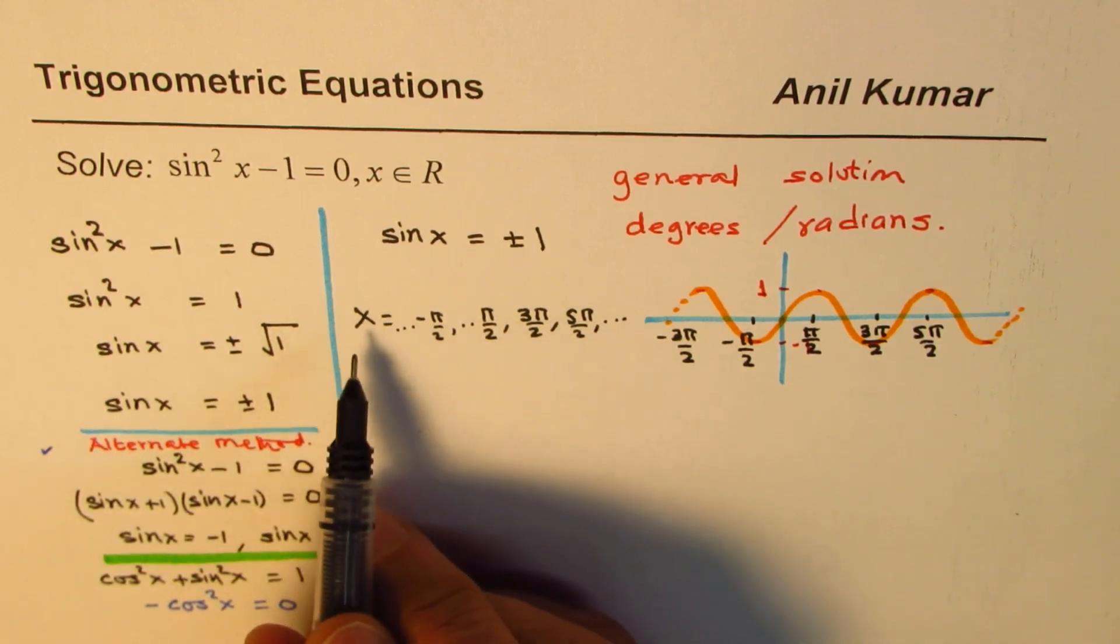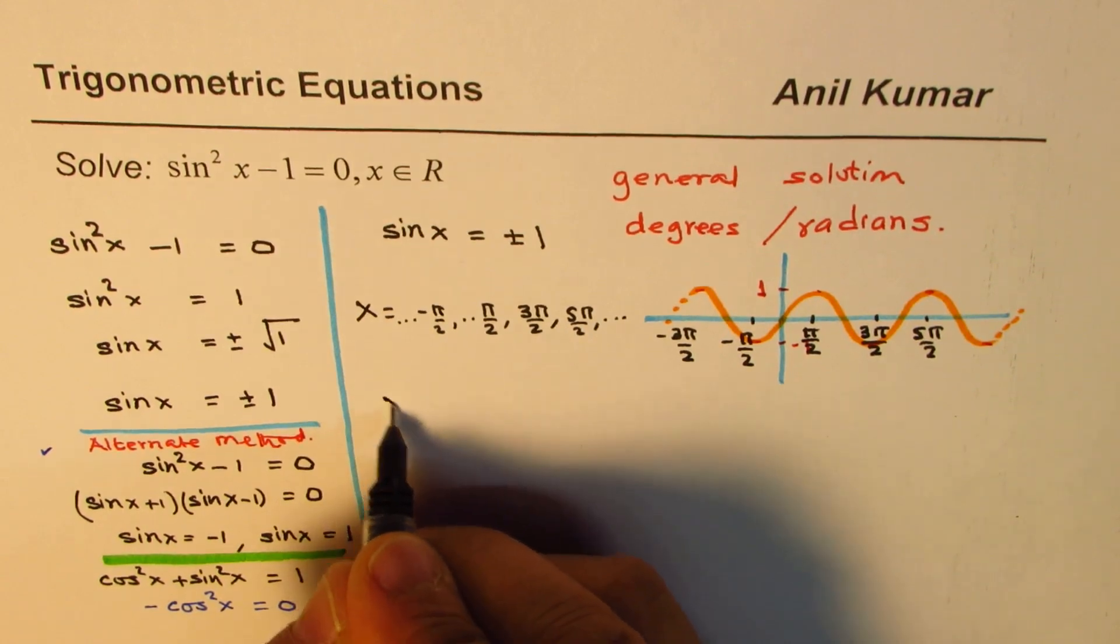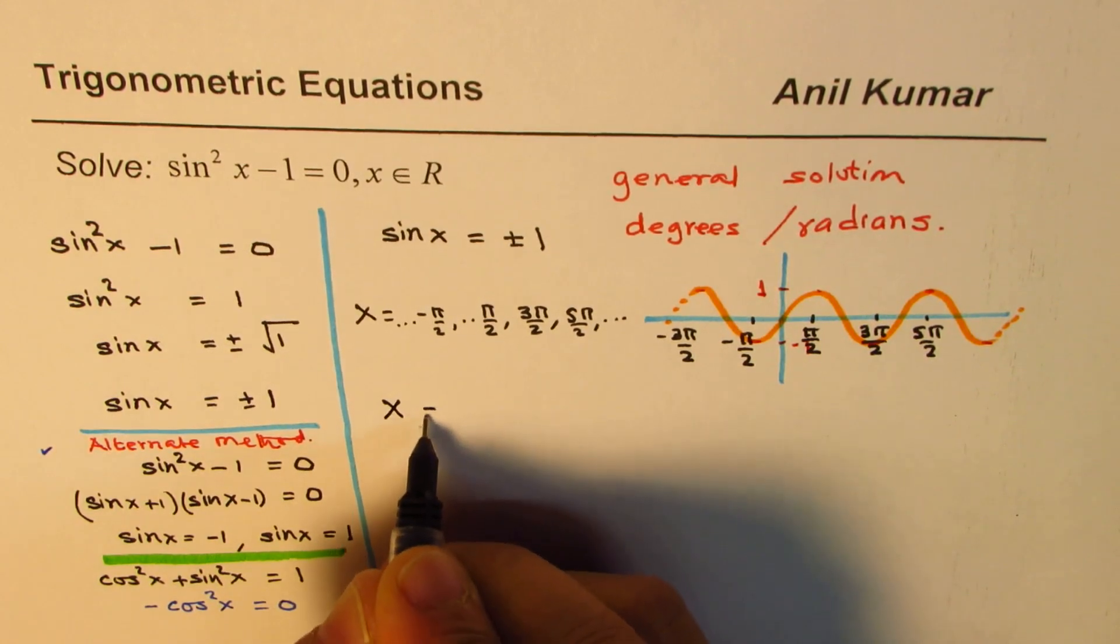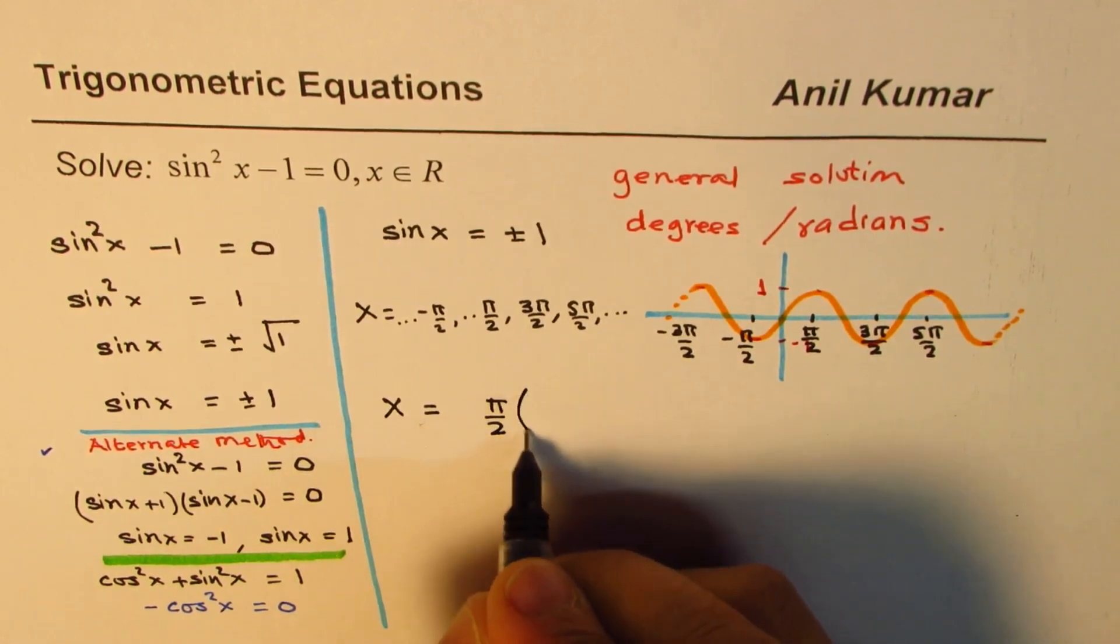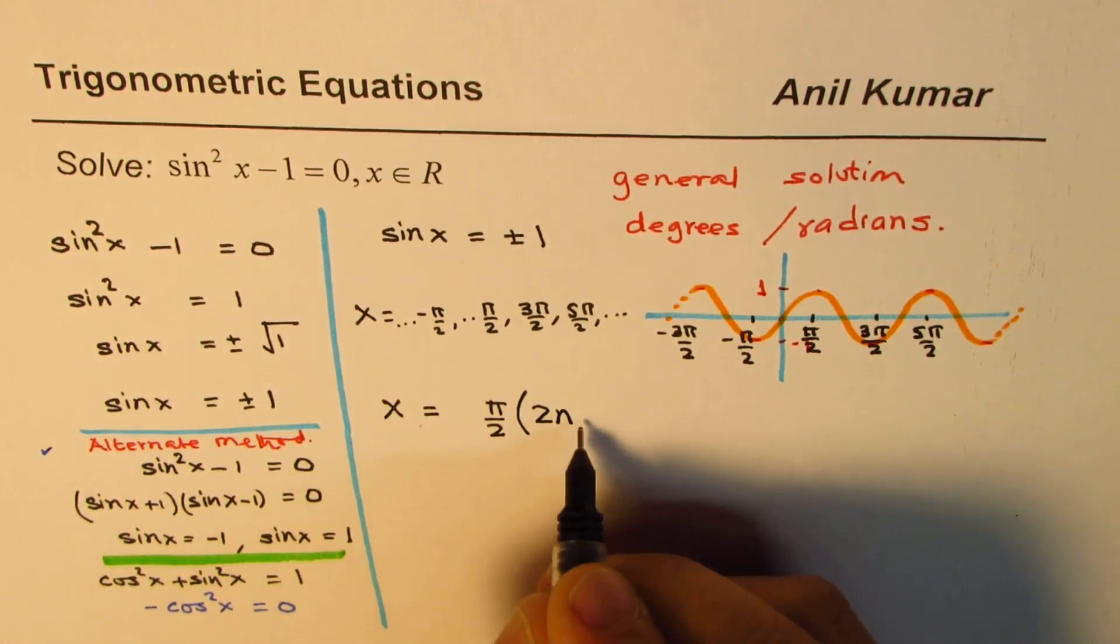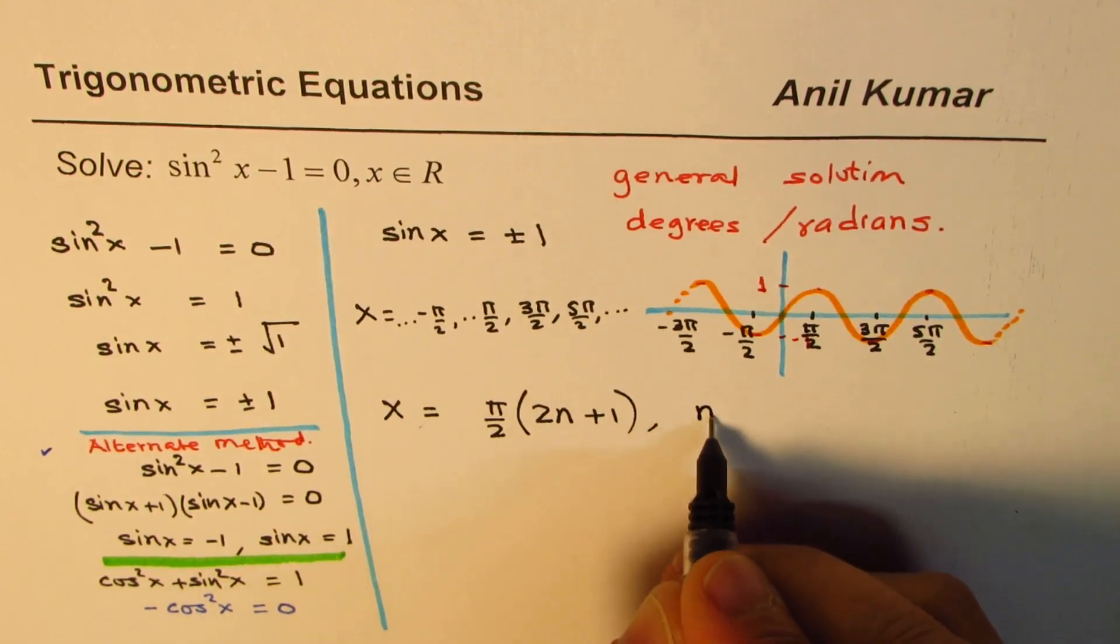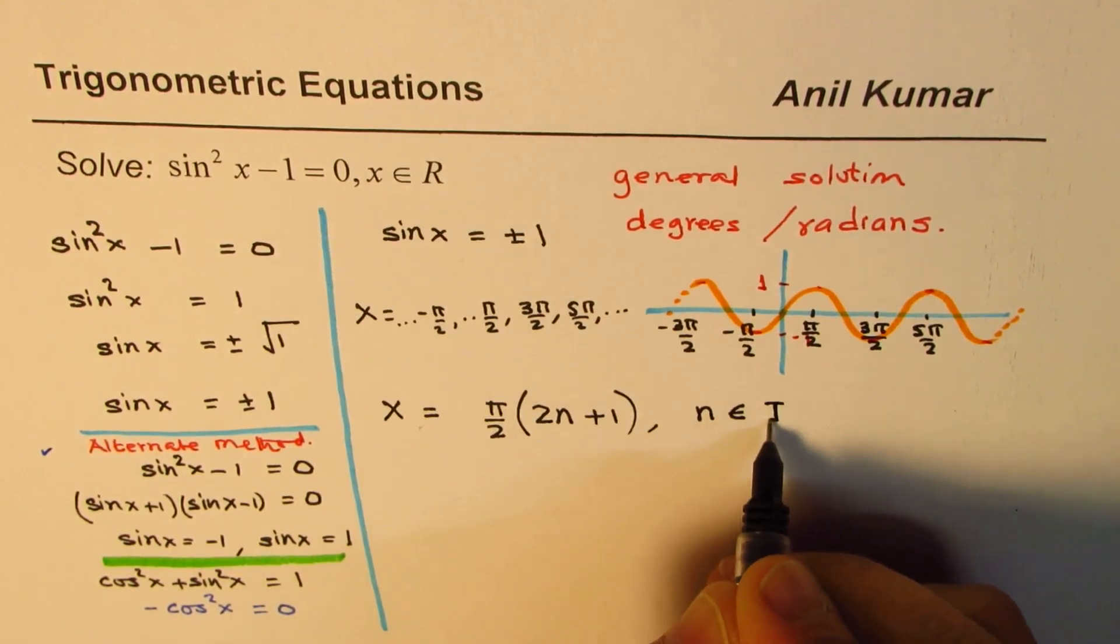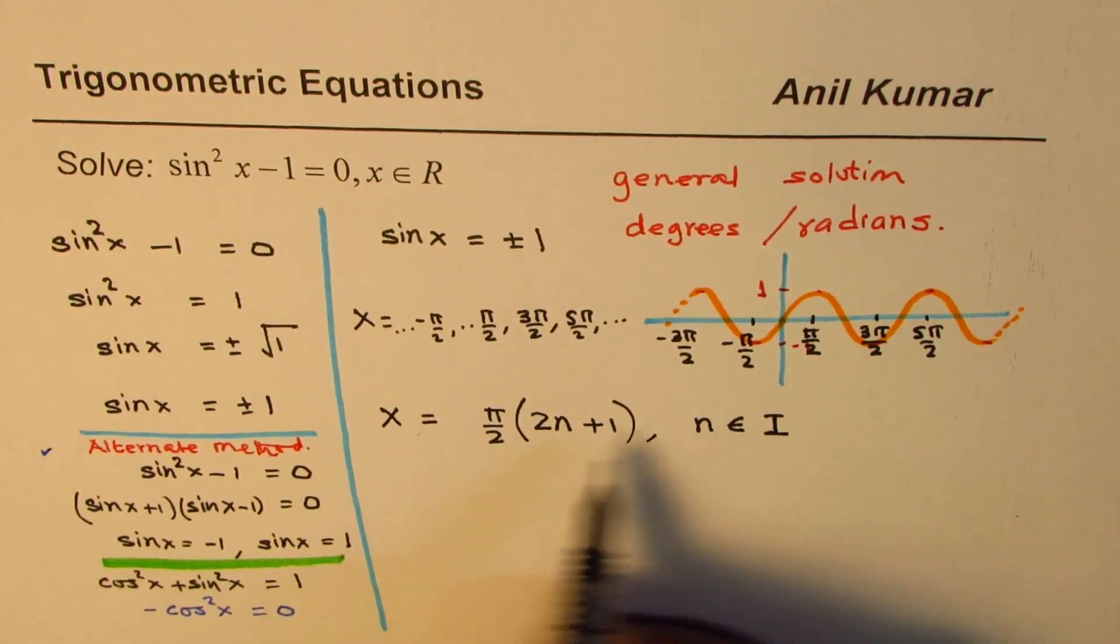A general statement which actually writes this in a proper way, as you should write, is x is equals to pi by 2 times 2n plus 1. So, that gives you odd multiples where n belongs to set of integers. So, that completely gives the whole solution.